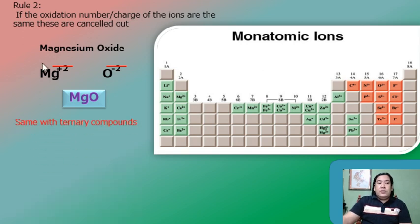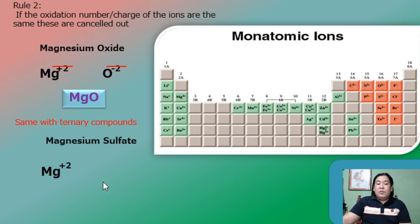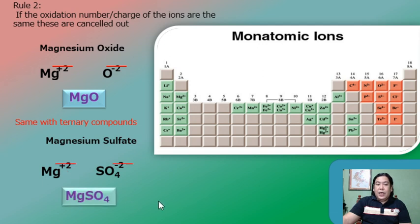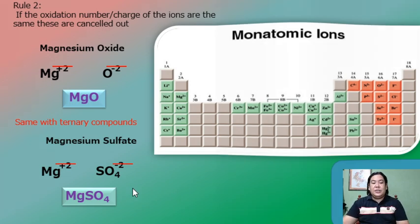This rule also applies to ternary compounds. For magnesium sulfate, magnesium is positive 2 and sulfate is SO₄²⁻. Since both charges are 2, they cancel out. Combining them gives MgSO₄, which is the formula for magnesium sulfate.